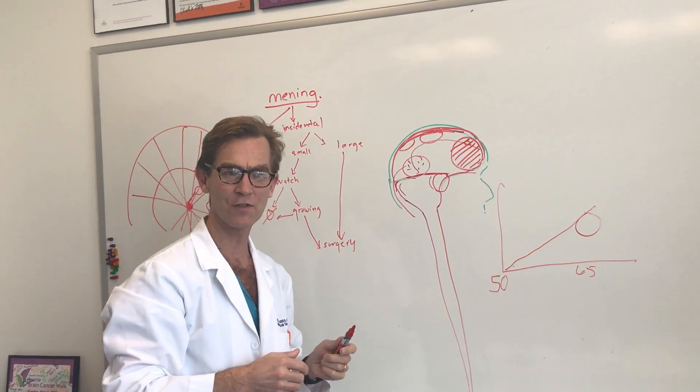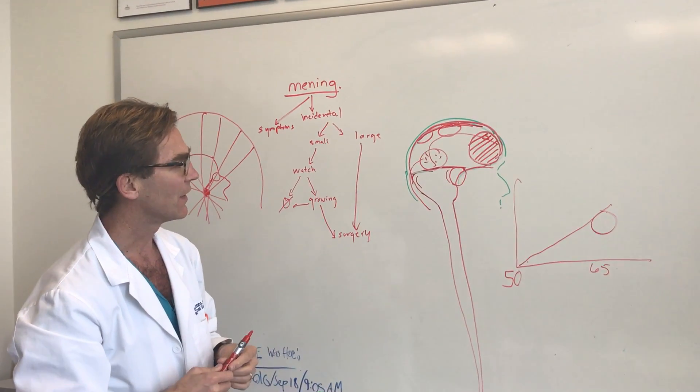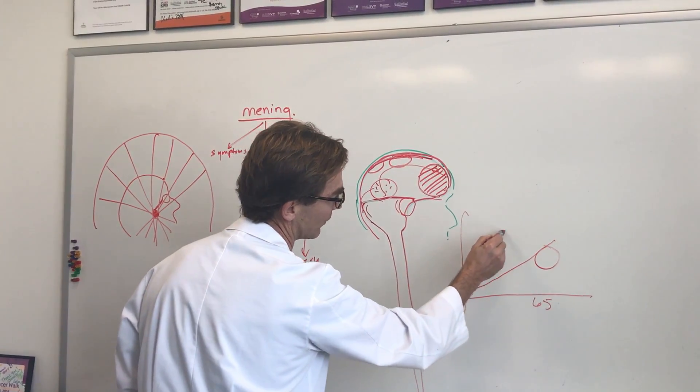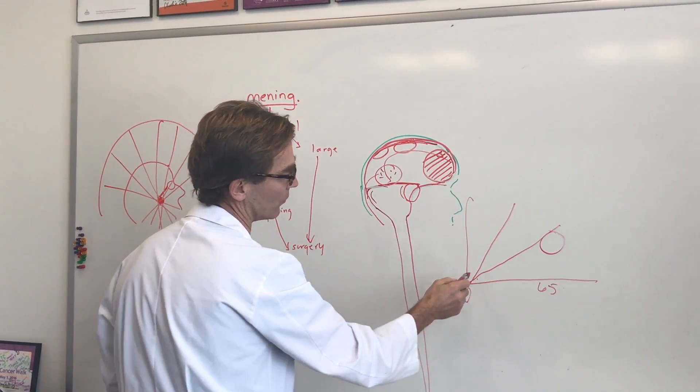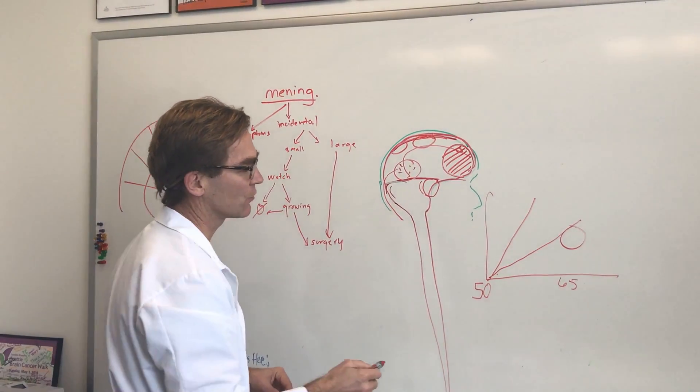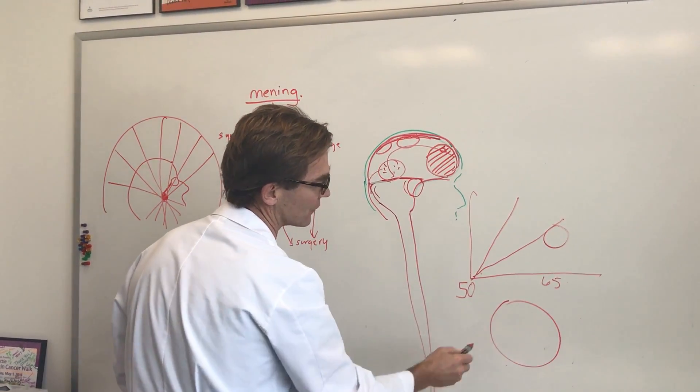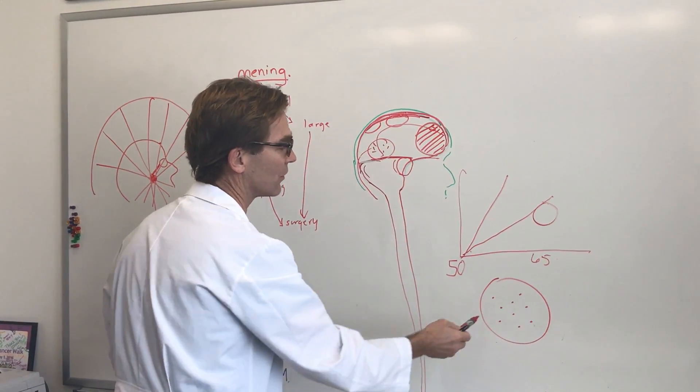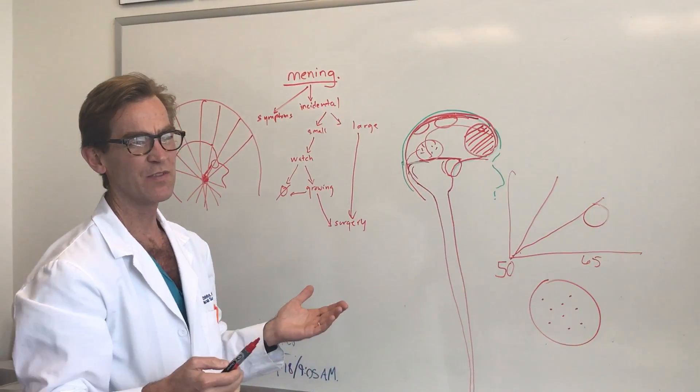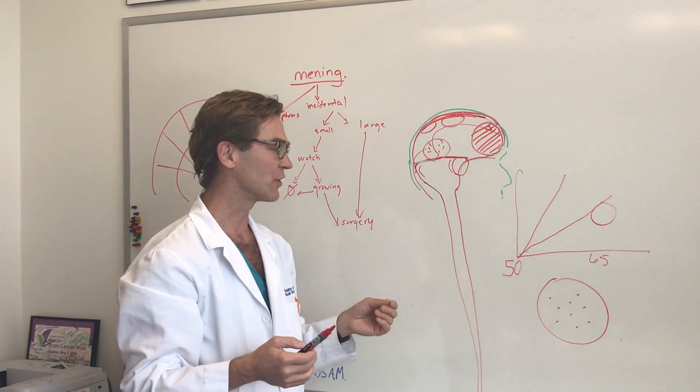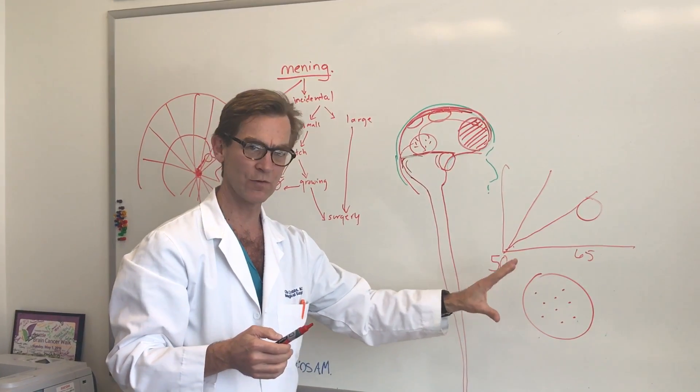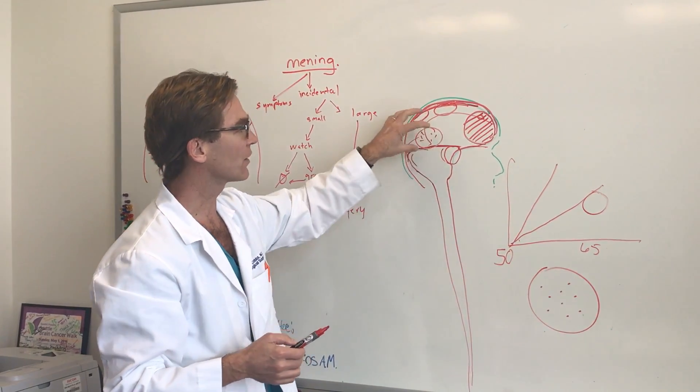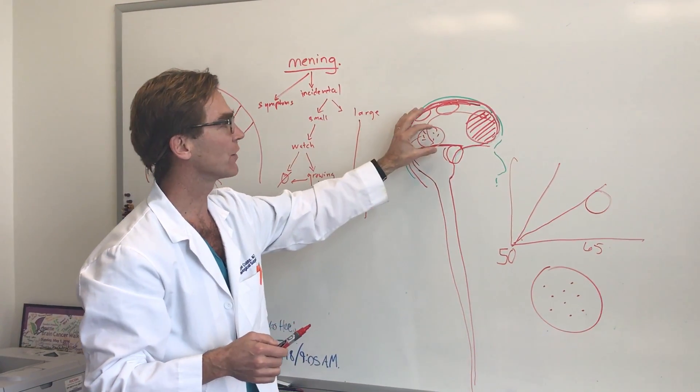About 5% of meningiomas will be so-called atypical or aggressive or malignant meningiomas, and these instead of growing over a 15 year period they might grow more at a rate like that. We can tell which ones are more aggressive because we look at them under the microscope. If there are a thousand cells here we can put a little thing on there that tells us how many of those cells are dividing. If you get over a rate of about 15% cell division that suggests that these guys are really more aggressive, and there are other features the pathologist looks at.